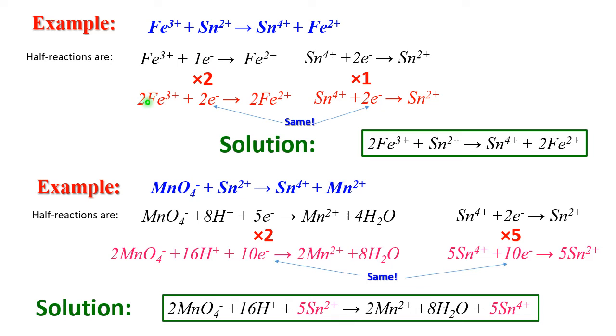This one we're multiplying by 2, so this will be 2Fe³+ plus 2 electrons goes to 2Fe²+. This we add with opposite sign. The result will be 2Fe³+ plus Sn²+ makes Sn⁴+ and 2Fe²+.